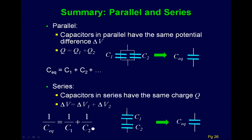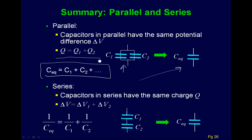To summarize for series and parallel capacitors: when in parallel, the equivalent capacitance is C1 + C2 — the charges add up and the potential difference is the same across each. When in series, the charges on each capacitor are equal, and the voltage drop across the equivalent equals the sum of the individual voltage drops. There's also an additional example problem accessible from the Portal for more practice.